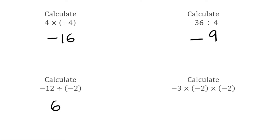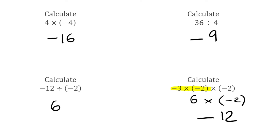For this last one I've got negative 3 multiplied by negative 2 multiplied by negative 2. I'm just going to do the first bit to begin with: negative 3 multiplied by negative 2. A negative times a negative is a positive, and 3 times 2 is 6, so that simplified is just 6. Then I have to multiply that by the remaining negative 2. So now we've got 6 times negative 2 — a positive times a negative. Signs are different, so that gives me a negative overall. 6 times 2 is 12, so the final answer to negative 3 times negative 2 times negative 2 is negative 12.